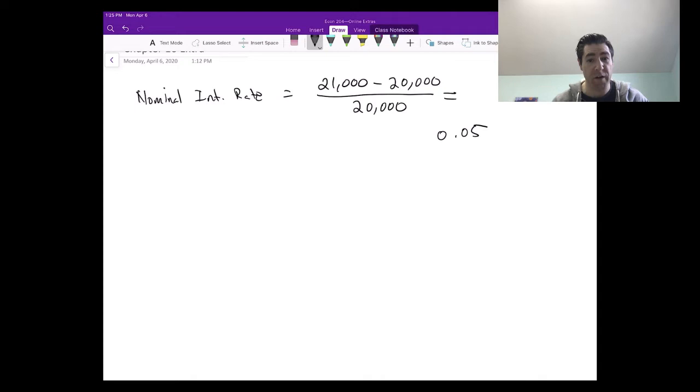What we want to do now when I talk about real interest is figure out, okay, in one year I pay back $21,000, but as we learned earlier in the semester, as the cost of goods and services increases, one dollar in the future isn't necessarily equivalent to one dollar today.